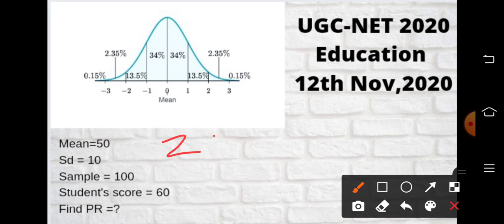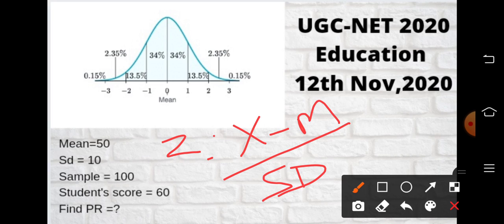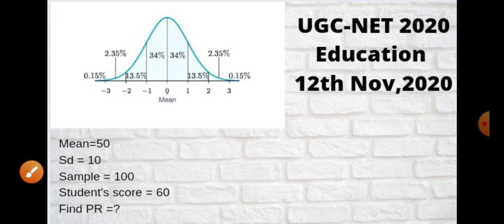As you know, the Z-score formula is X minus M divided by the standard deviation. X here is the student's score, which is 60, the mean score is 50, and your SD is 10. So first you have to identify the Z-score.